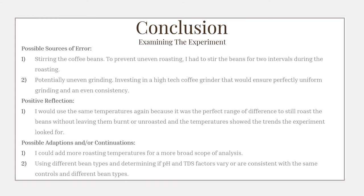Some possible sources of error in my experiment were stirring the coffee beans. I had to do it to prevent uneven roasting, but there's potential that it did release some heat. There was also potential for uneven grinding, but investing in a high-tech coffee grinder could ensure perfectly uniform grinding and even more consistency. A positive reflection are the temperatures, because they were the perfect range to tell the difference in the beans without having them too unroasted or burnt.